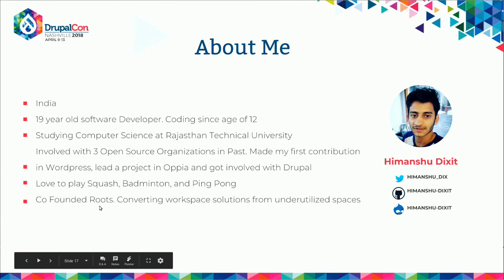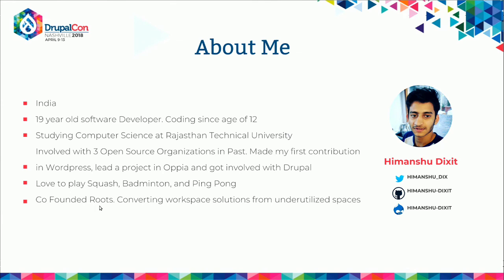Hi everyone. My name is Himanchu Lakshet. I'm from India. I'm currently a 19-year-old software developer and I've been coding since the age of 12 — so about seven years into coding. I'm currently studying computer science engineering at Rastan Technical University in Jaipur, Northern India. I've been involved with three open source organizations. My first contribution was to WordPress, where I uploaded my personal project. I wanted a functionality, couldn't find it, so I created and uploaded it. I wanted to participate in GSoC 2016, and through that I got involved with OpenMRS. After that I got involved with Drupal as part of my GSoC 2017 project. I also love to play squash, badminton, and ping pong. I have co-founded a startup in India converting underutilized spaces into office workspace solutions.